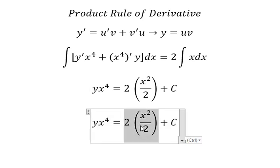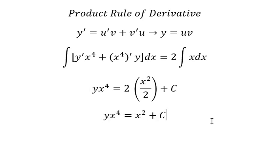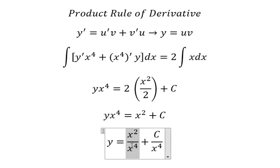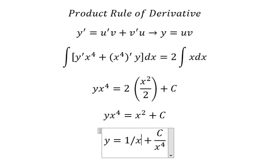So we need to simplify. We divide both sides by x to the power of 4. This one is 1 over x².